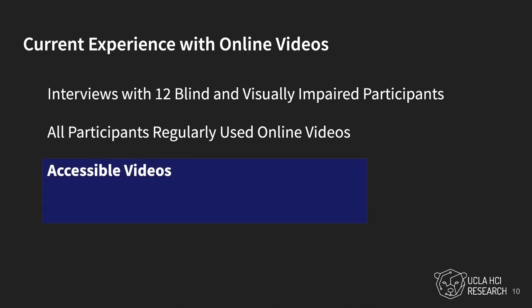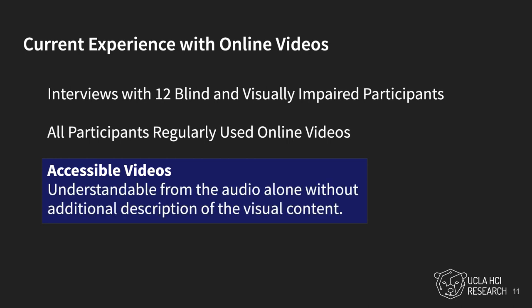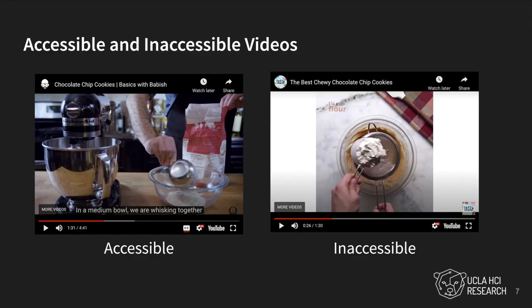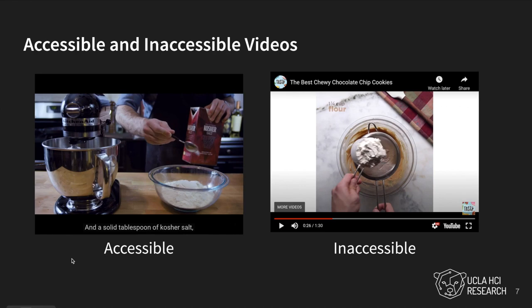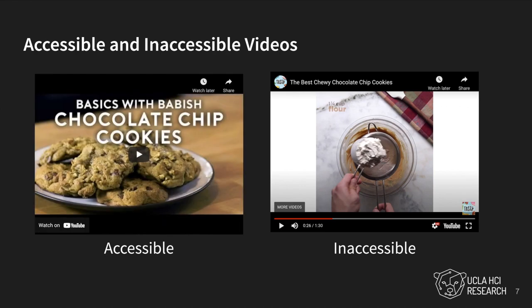All participants mentioned that they searched for videos that were already inherently accessible, or understandable from the audio alone without additional description of the visual content. For example, a more accessible video may narrate each step of a chocolate chip cookie demonstration, while a less accessible video may only play background music or only visually demonstrate the steps.